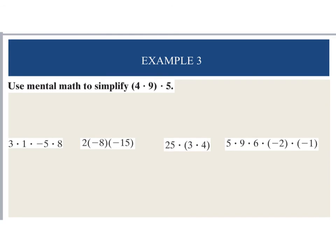Now for example 3, we're using mental math to simplify, but now we're doing multiplication. So personally, when I look at this, if I take and I multiply my 4 and my 5, this is going to give me 20, and then I have to multiply by 9. Well, 2 times 9 is 18, and then because of that 0 at the end, I know I'm going to have 180.